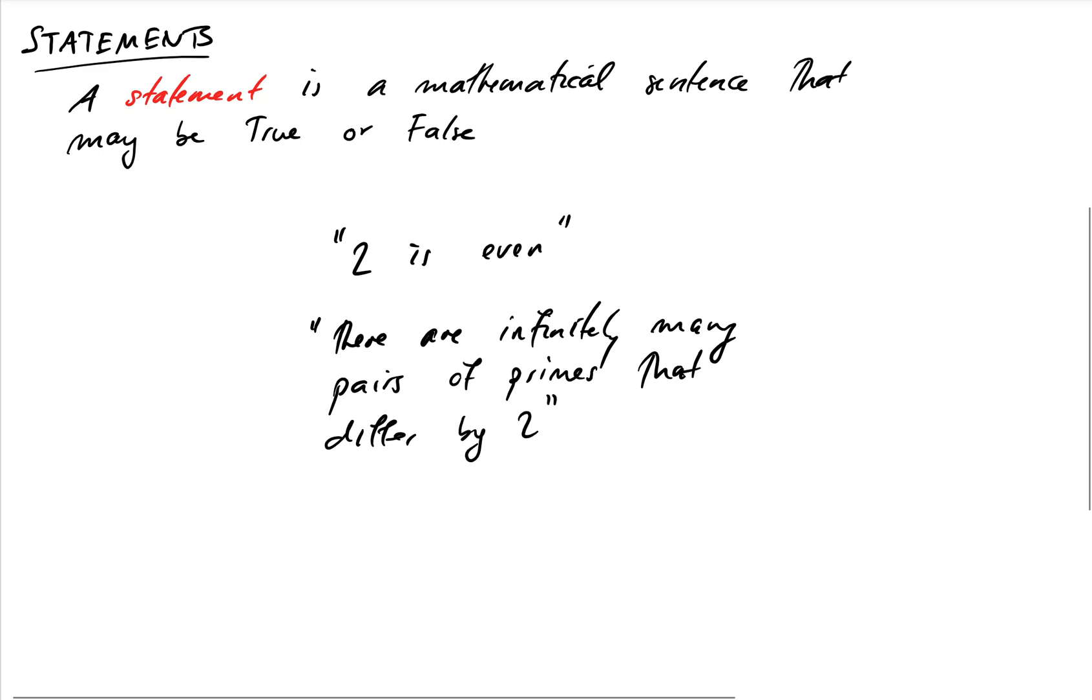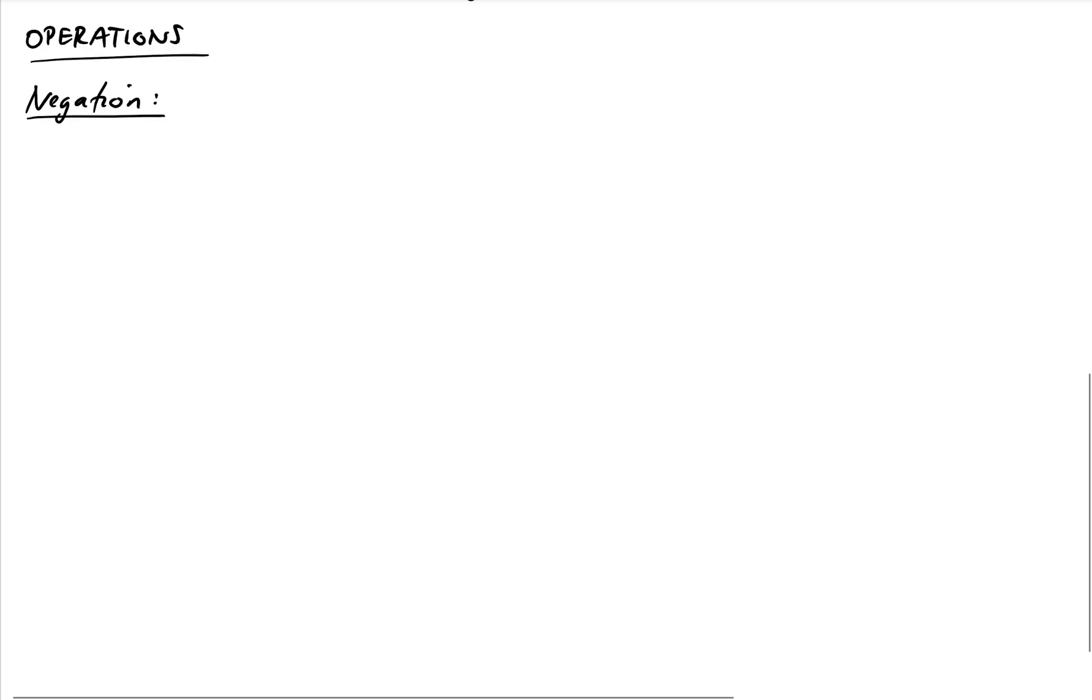So now that we've just defined what a statement is, let's have a look at some of the operations that we can do on them. The first of these is negation. So if we start with a statement P, then the negation of P, which we denote with the symbol here, this is the negation of P, is just the opposite statement. And we can represent how this works in a thing called a truth table. So if we've got P here, possible values that P can take are true or false, the corresponding statement not P, or the negation of P, has got the opposite truth values, false and true.